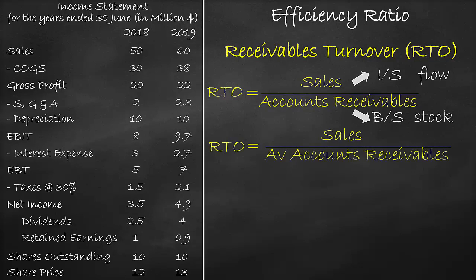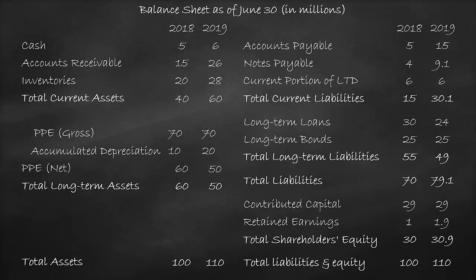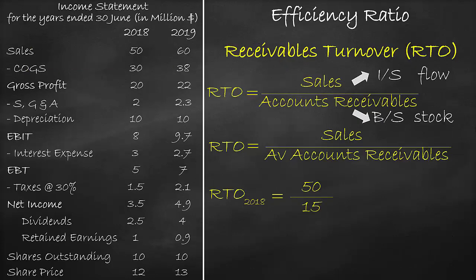Let's calculate the Receivables Turnover for the year 2018. Sales is equal to $50 million. Looking at the Balance Sheet for Accounts Receivables — please note that 2018 is the first year of operations. Consequently, we do not have the average of the Accounts Receivables as we do not have a previous year. We have the Accounts Receivables in 2018 of $15 million, so in our formula we will divide by $15 million, which is equal to 3.33 times.